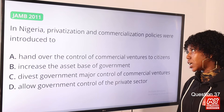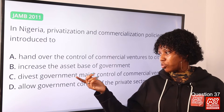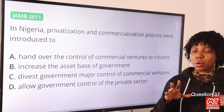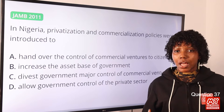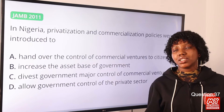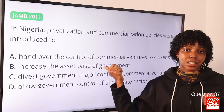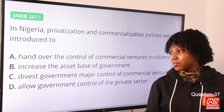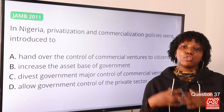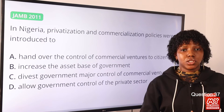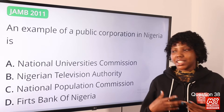Question 37: In Nigeria, privatization and commercialization policies were introduced to — the answer is option C: divest government of major control of commercial ventures. When we think of privatization and commercialization, a private company takes over ownership, control, and management of public enterprises. Since the private company is in charge, it does not increase the asset base of the government and does not allow government control of the private sector. It deprives the government from controlling commercial ventures.